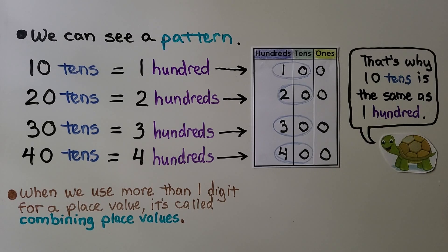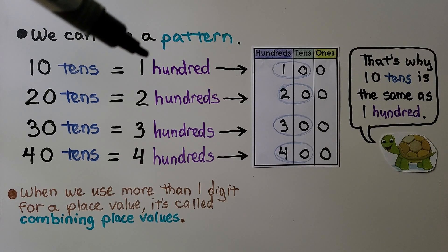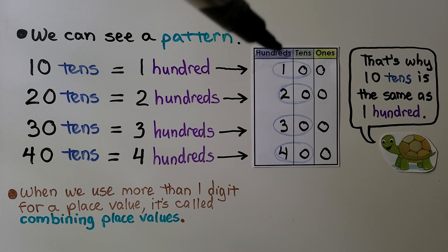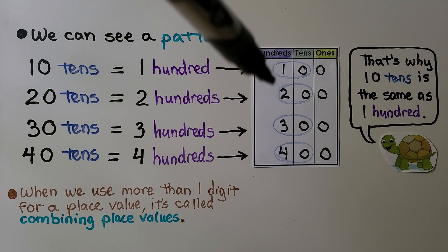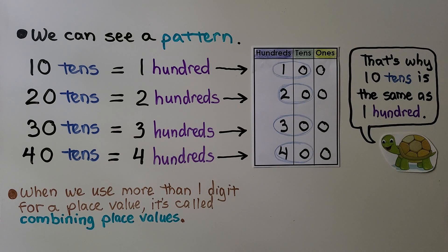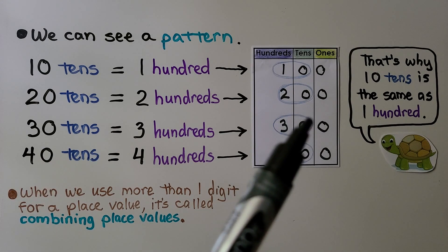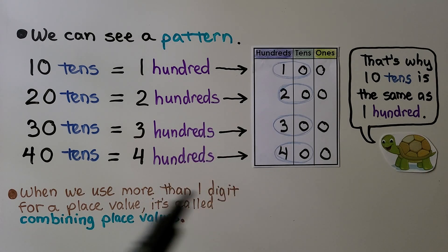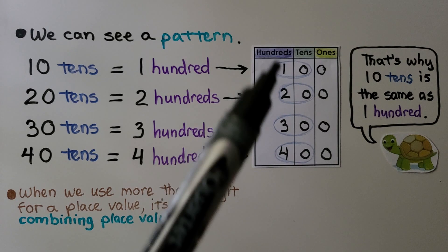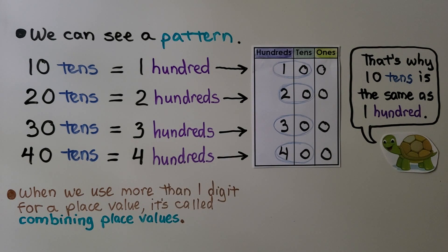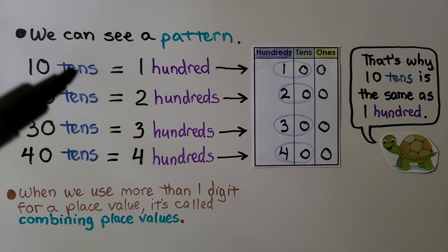And we can see a pattern. 10 tens is equal to 100. 20 tens is equal to two hundreds — we have a two in the hundreds place. 30 tens is equal to three hundreds — we have a three in the hundreds place. And 40 tens is equal to four hundreds — we have a four in the hundreds place. When we use more than one digit for a place value, it's called combining place values. So we've combined place values and said 10 tens instead of 100, but they are equal to each other.